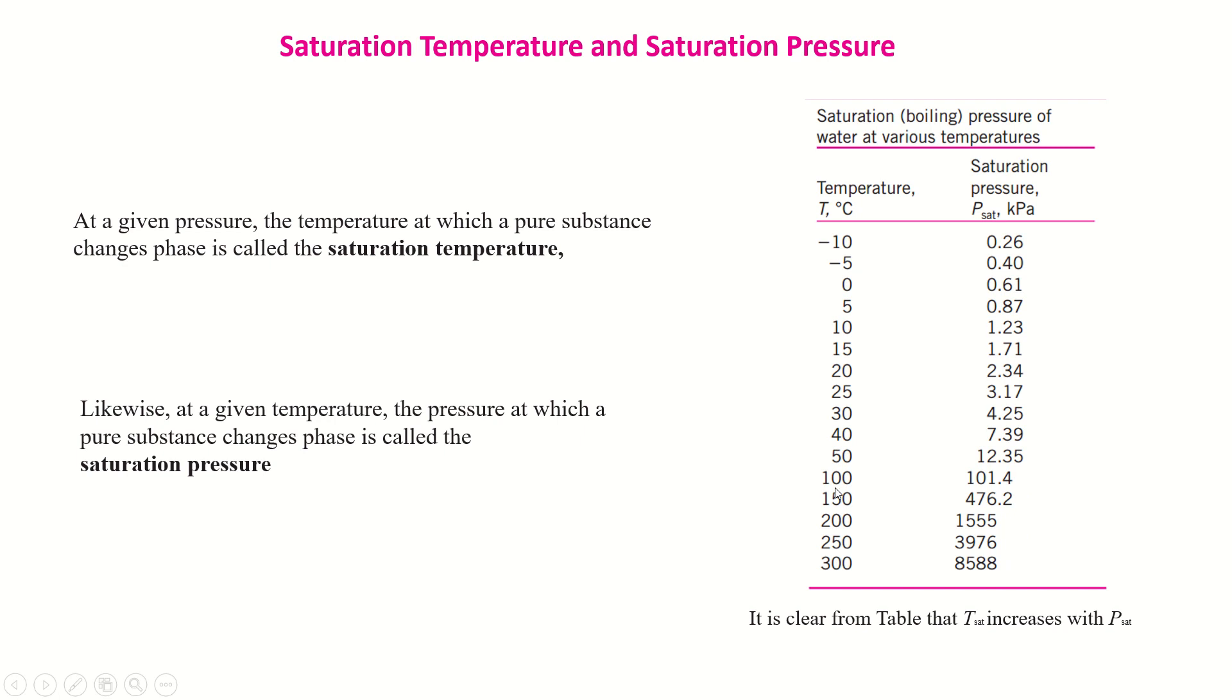The boiling temperature of water is 100 degrees centigrade at 101.4 kilopascal. 101.4 kilopascal is the atmospheric pressure. If we decrease this pressure to 12 kilopascal, the boiling temperature of water will be decreased to 50 degrees centigrade. That means if we create a vacuum in which the pressure is 12 kilopascal, the boiling temperature of water will be dropped.